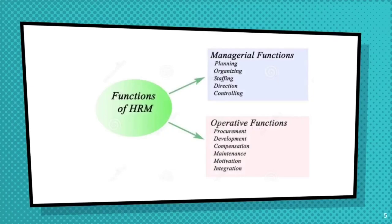Directing means guiding employees at different levels and making them contribute maximum to the organization. Staffing involves allocating employees. Controlling means to control the planning, organizing and directing of employees, and actual performance is checked, verified and compared with plans. These are the managerial functions played by HRM.